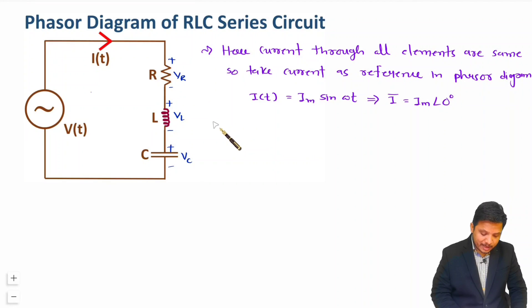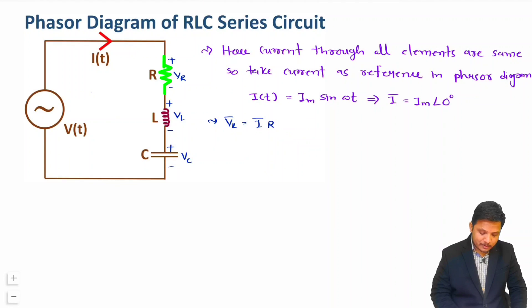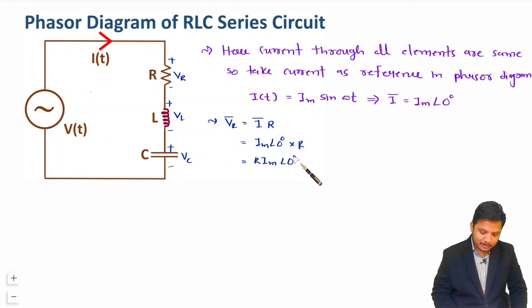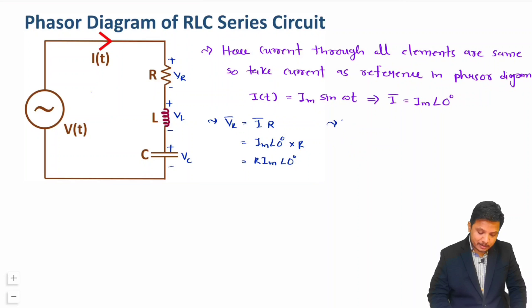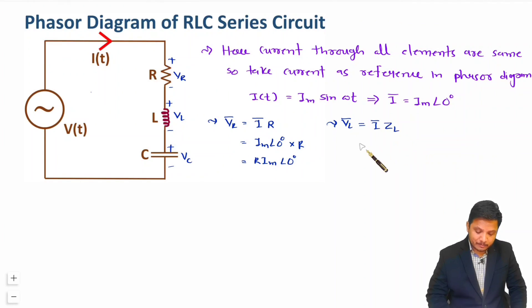VR in terms of phasor equals the current in phasor form multiplied by its impedance R. So VR = Im∠0° × R = R·Im at angle 0°. For VL in phasor form, VL-bar equals the current phasor multiplied by impedance ZL, which is jωL. So VL = Im∠0° × jωL.